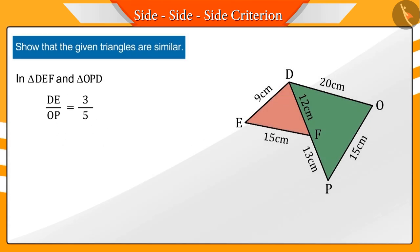Very good! For this, we need to find the length of side PD first. If we pay attention, we will see that the sum of sides PF and FD equals PD, which is 25. Therefore, the ratio of EF and PD is also 3 by 5.